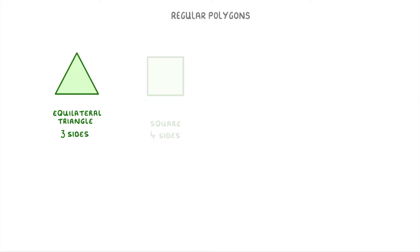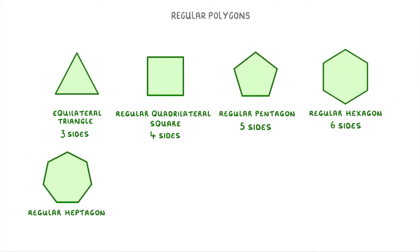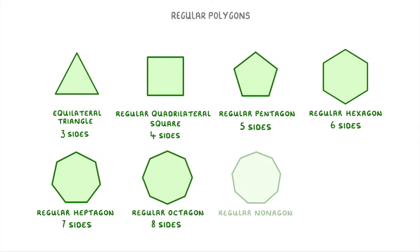So next we'd have a square, which is a regular quadrilateral, then a regular pentagon, then a regular hexagon, a regular heptagon with seven sides, a regular octagon, a regular nonagon with nine sides, and finally a regular decagon which has ten sides.